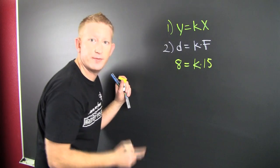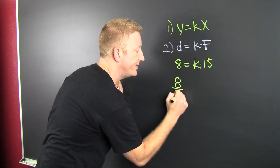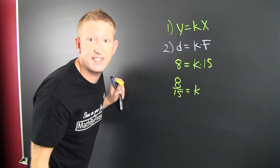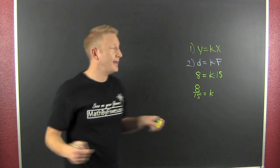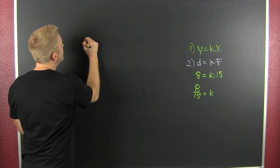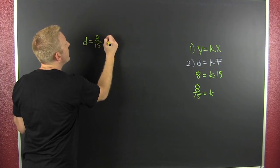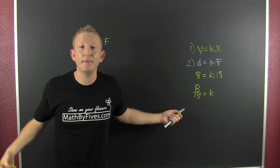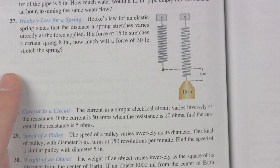We're finding K in our third step, so 8 over 15 — that's K. Now for step four, we're going to set up the specific equation with our found K. So the distance equals 8/15 times the force. May it be with you to answer the problem.